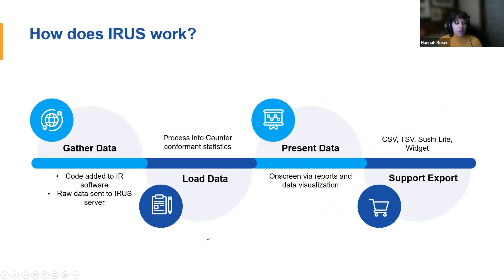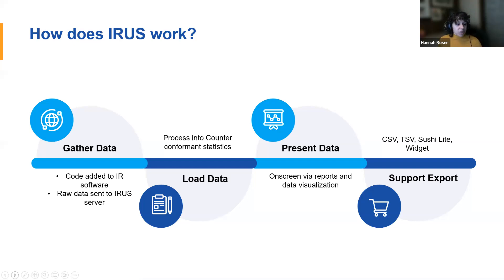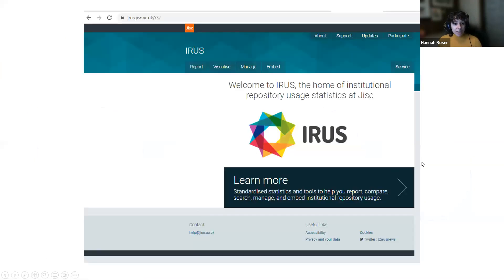How does IRIS work? It gathers data from your institutional repository using code to activate the repository software so it sends raw data to the JISC team, sent to their special IRIS server, processed into COUNTER-conformant statistics, then presented on screen via searchable reports with some data visualizations. If you want to export that information, you can export CSVs, TSVs, there's SUSHI compatibility, and there's a widget that can be embedded into your repository.